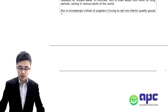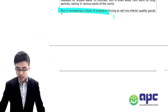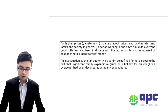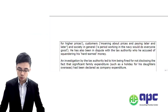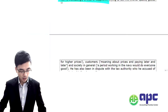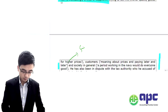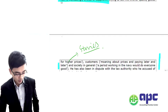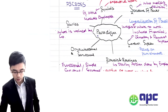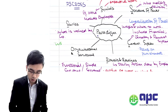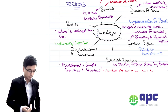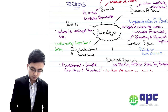Ron is increasingly critical of suppliers, saying they try to sell him low-quality goods at higher prices. He also complains that customers moan about prices and pay later and later, and that staff are lazy. He claims that discipline like the Navy would do everyone good. He has also been in dispute with the tax authority, who accused him of squandering his hard-earned money. These represent the stories that Ron tells within the organisation — about late-paying customers, unreliable suppliers, and lazy staff.